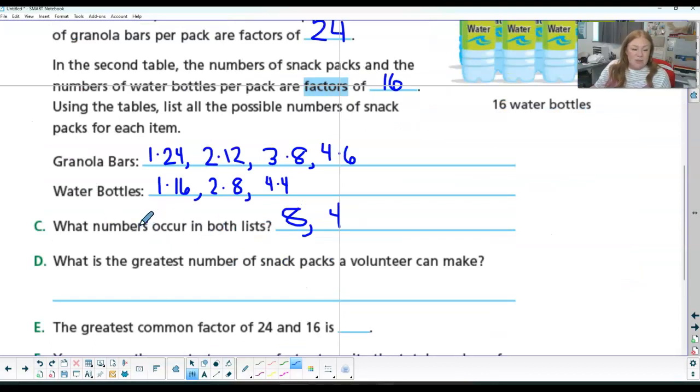So which numbers? 2 and 1. So now it wants to know what is the greatest number of snack packs a volunteer can make. So which of these is the biggest is 8. So the greatest number that they have in common when we find the factors is 8. So the greatest common factor of 24 and 16 is 8.